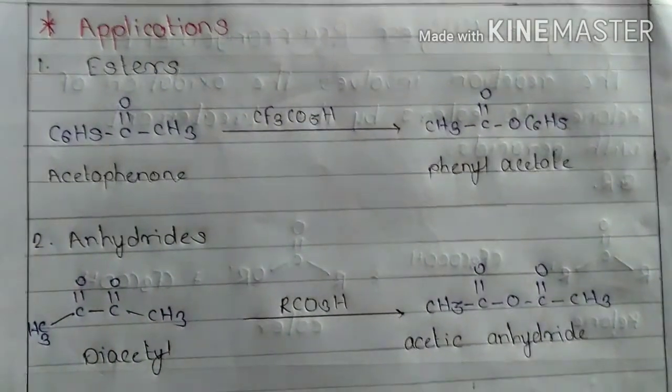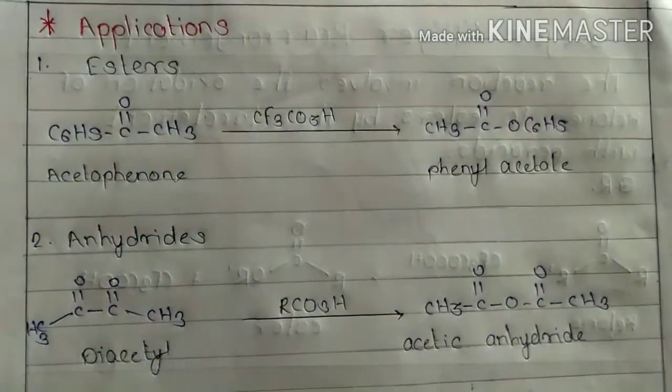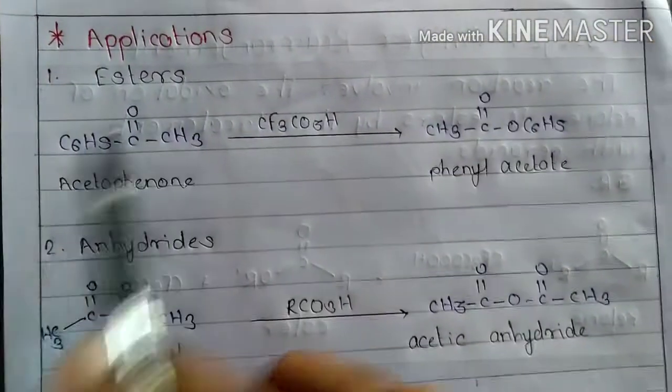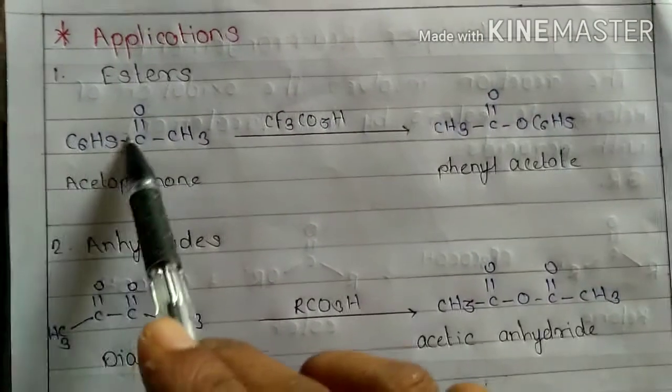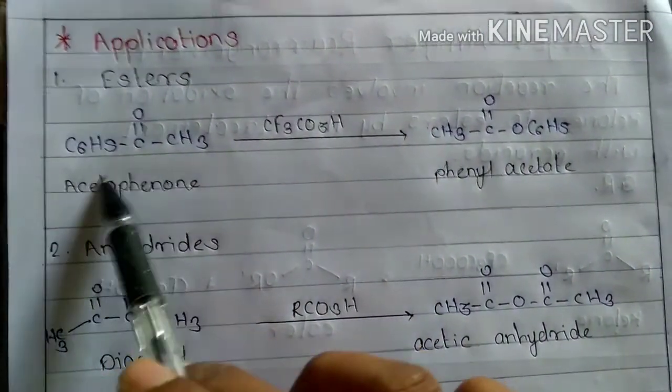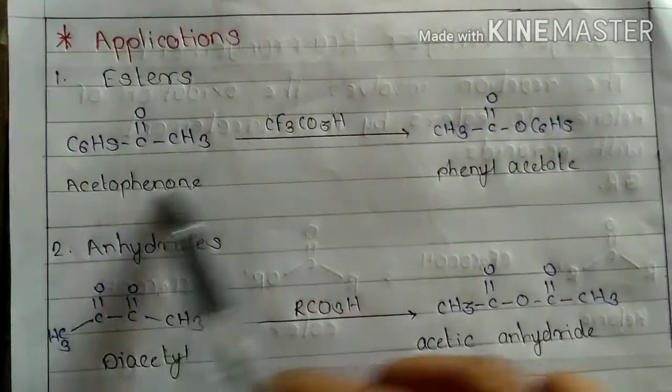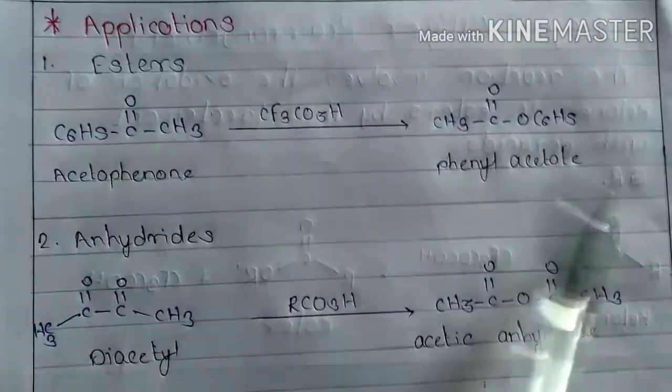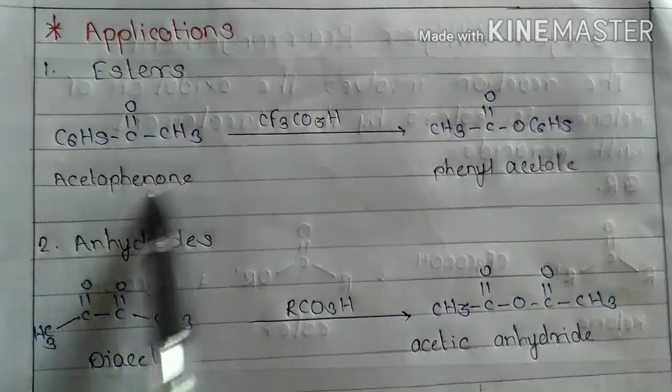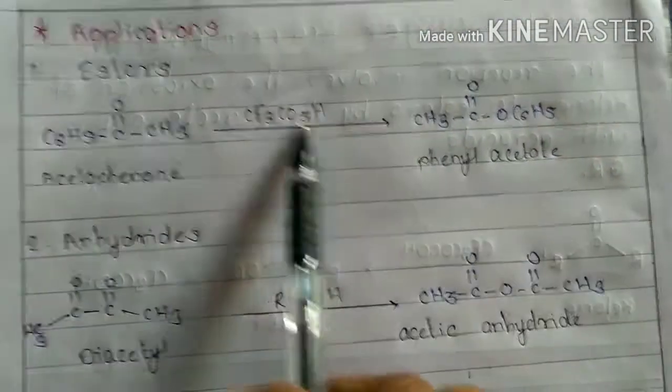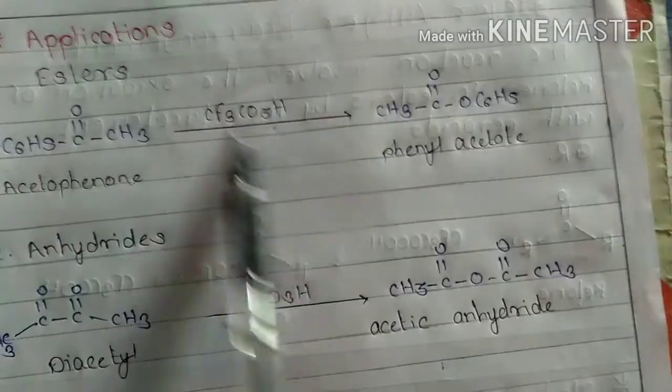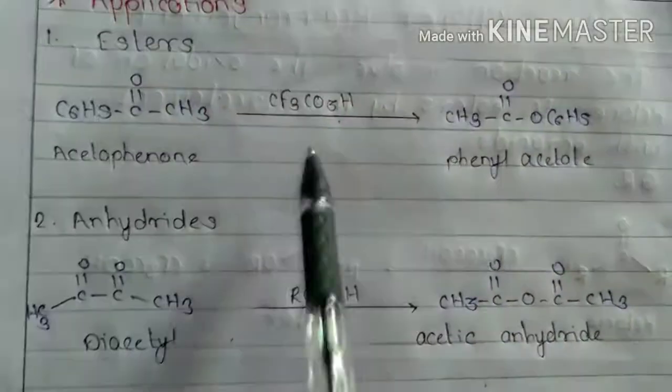Here are some applications of Baeyer-Villiger rearrangement. First one is ester formation. Here the C6H5 group migrates and formation of phenyl acetate takes place from acetophenone in the presence of trifluoro peracetic acid.